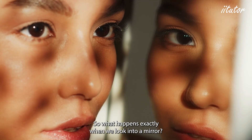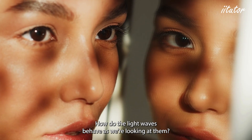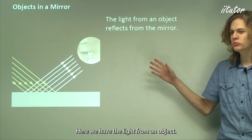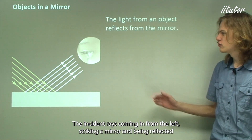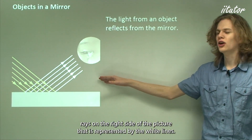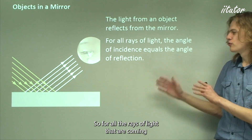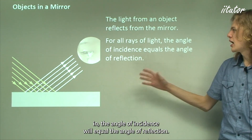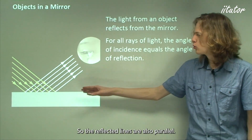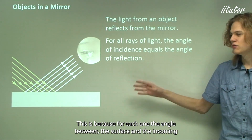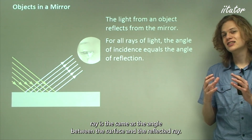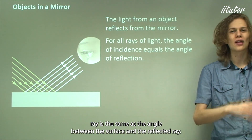So what happens exactly when we look into a mirror? Light from an object — the incident rays — comes in from the left, strikes a mirror, and becomes reflected rays on the right side. For all the rays of light coming in the angle of incidence equals the angle of reflection. All the incoming lines are parallel, so all the reflected lines are also parallel, because the angle between the surface and the incoming ray equals the angle between the surface and the reflected ray.